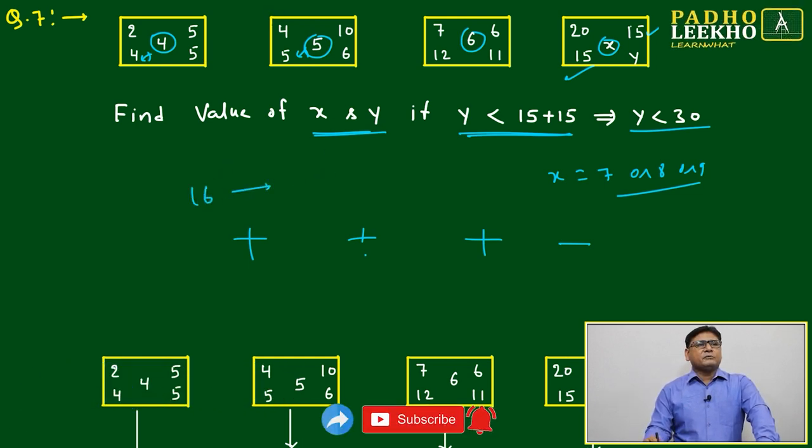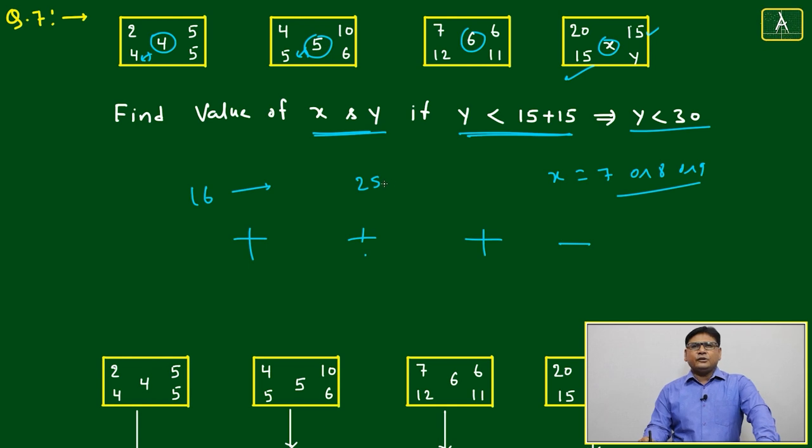Second number: 4 plus 5 is 10, plus 6 is 9... wait, 6 plus 15 is 25. Third: 7 plus 12 plus 6 plus 11 is 36. Any clue?